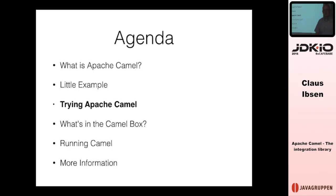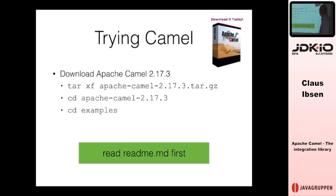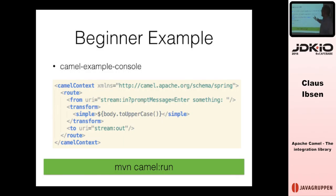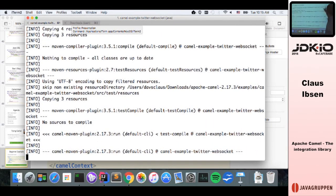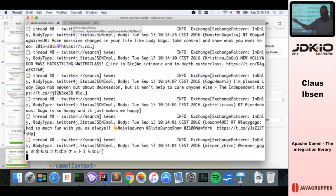There are many ways to run Camel and get started by yourself. You can go to the Camel website and download a zip, unzip Camel, and there are some examples you can try and run. The very beginner example is called CamelExampleConsole — it reads from your standard input and streams it out with some processing in between. There's also a Twitter example, which is the famous one. I can boot that up with the Maven Camel Run plugin.